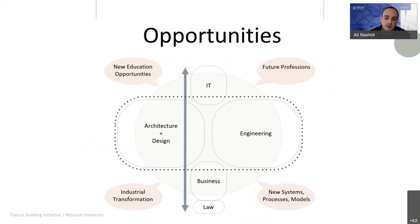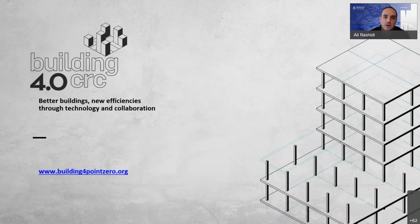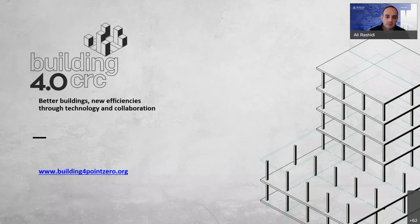One significant initiative: we received a research grant in 2020 called Building 4.0 CRC — Cooperative Research Centre. CRC is the highest-level government grant in Australia, allocated for the next seven years to transform the building industry through digitalization and automation. The total budget is around 130 million dollars.